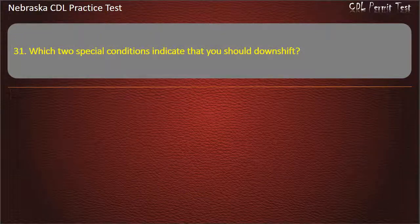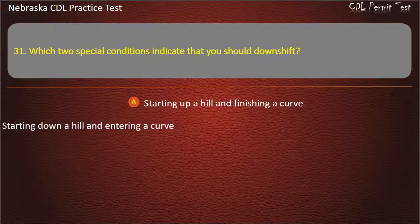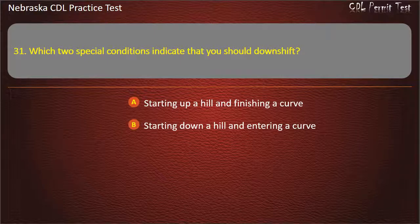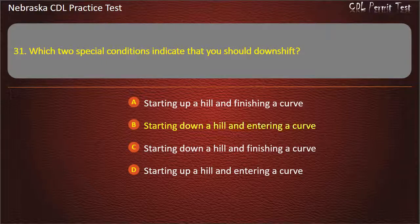Question 31. Which two special conditions indicate that you should downshift? Starting up a hill and finishing a curve; starting down a hill and entering a curve; starting down a hill and finishing a curve; starting up a hill and entering a curve. Answer: Starting down a hill and entering a curve.